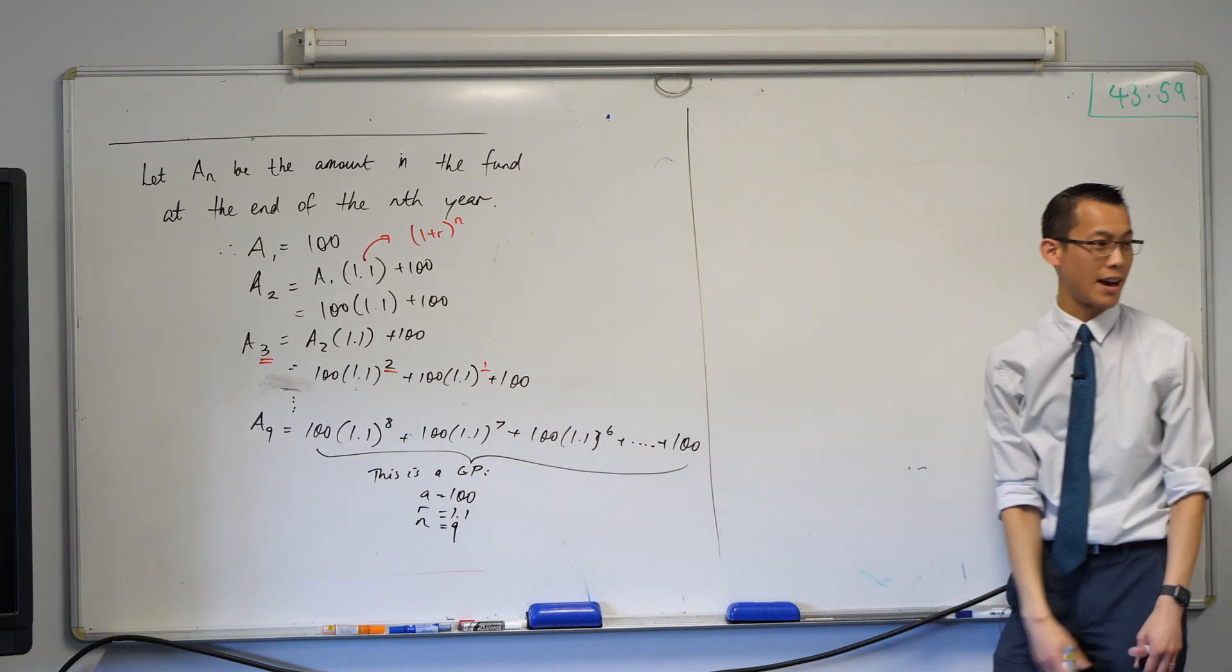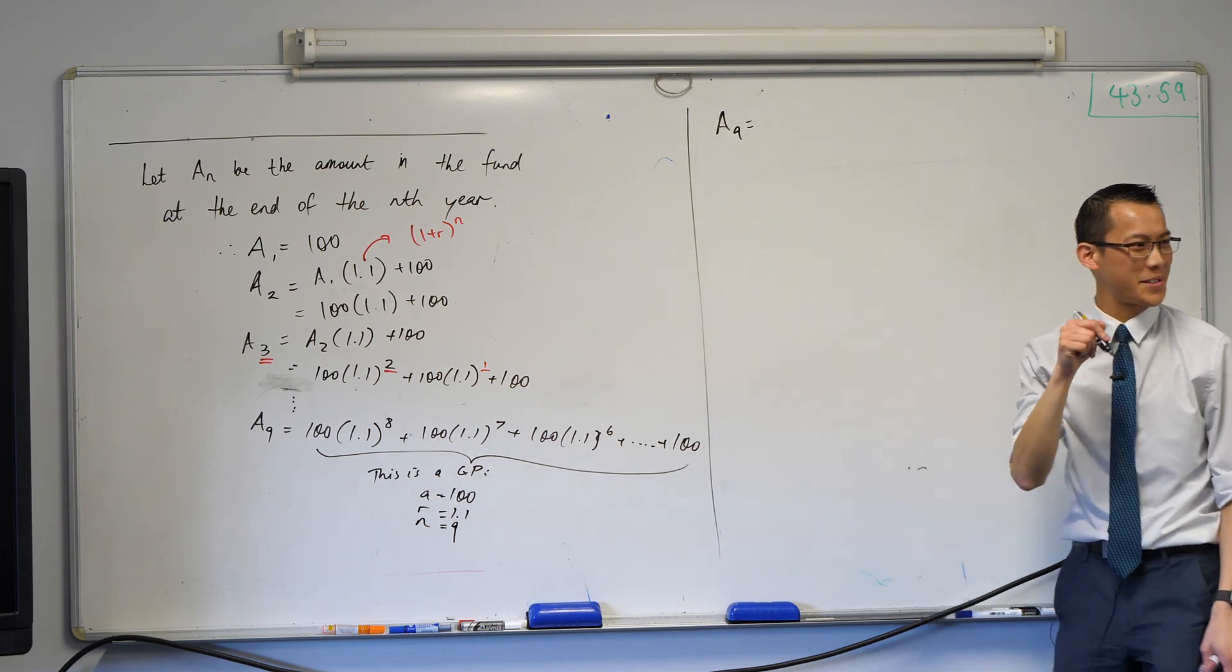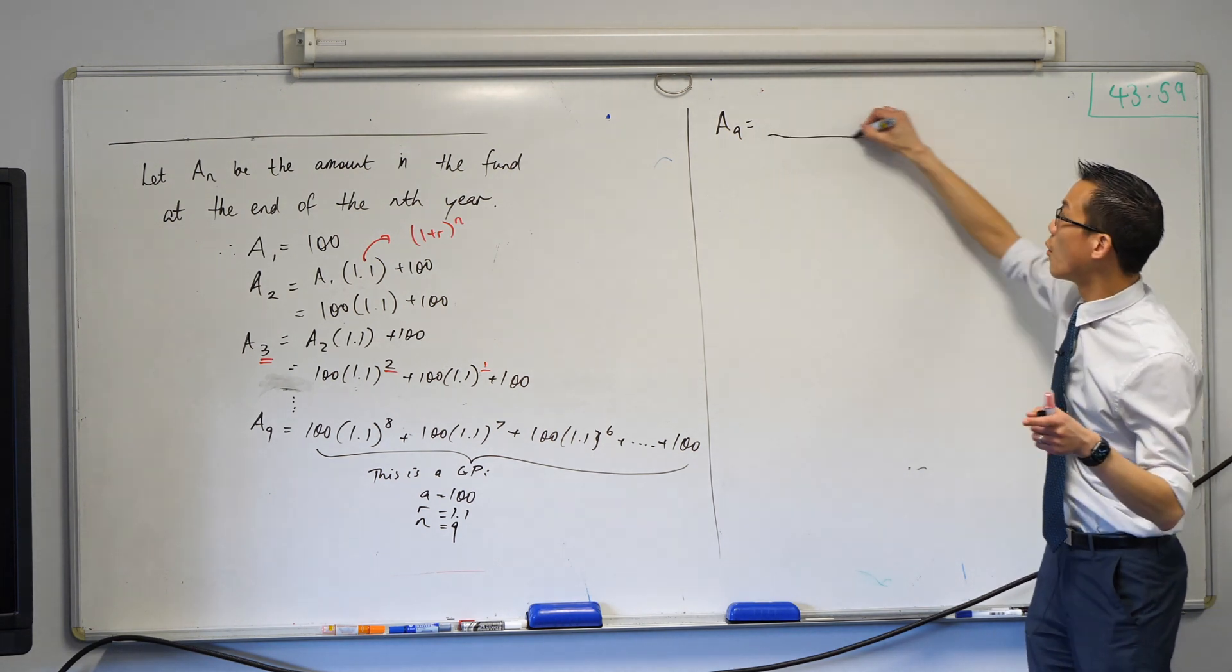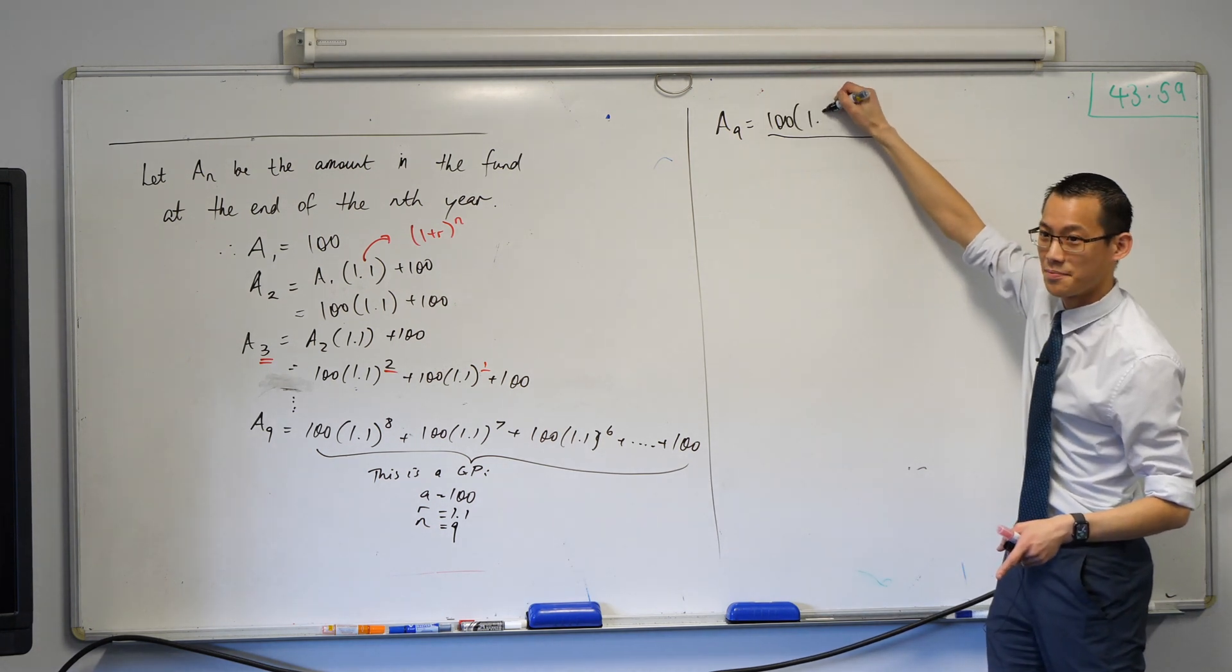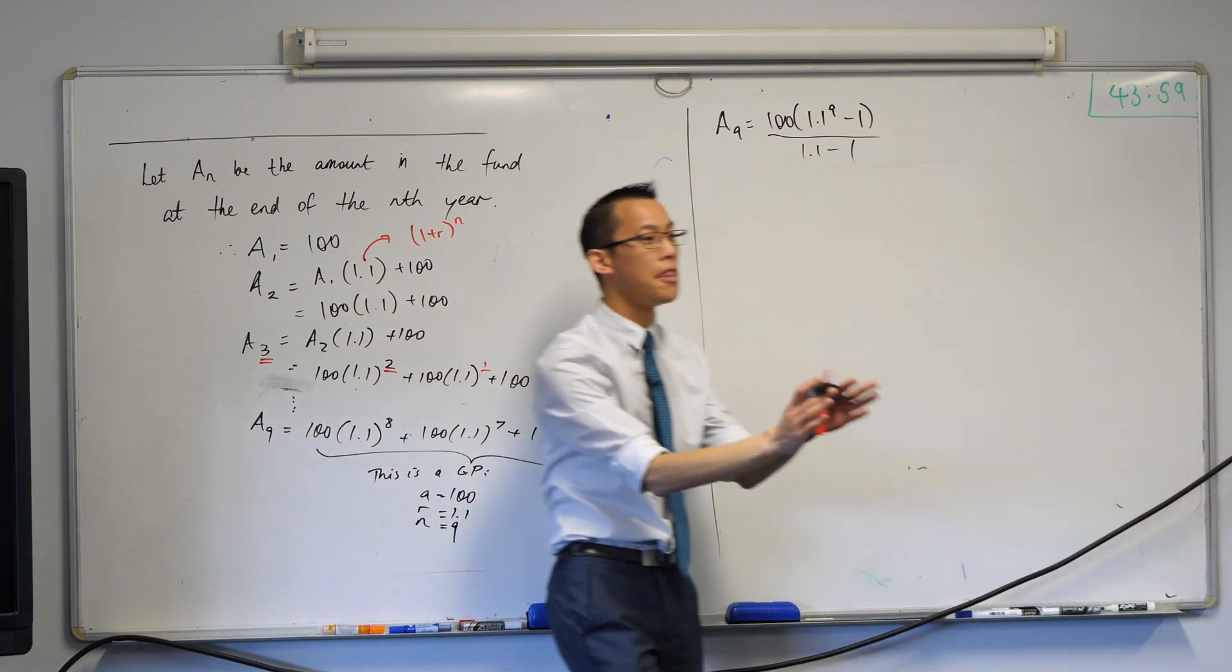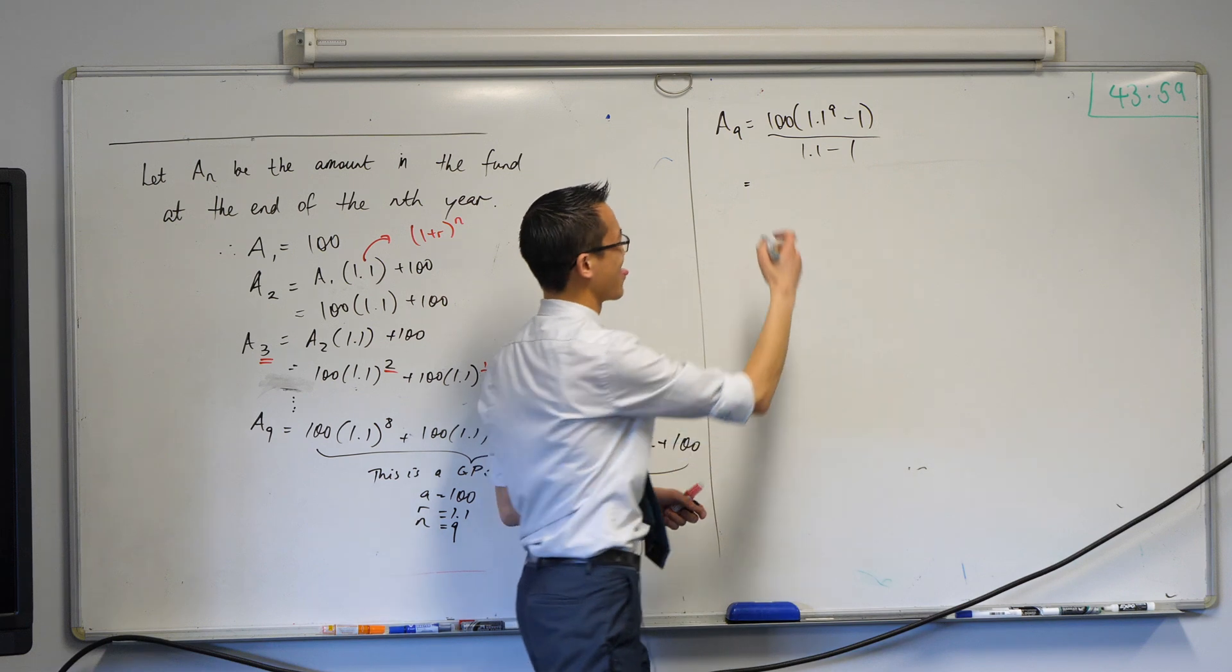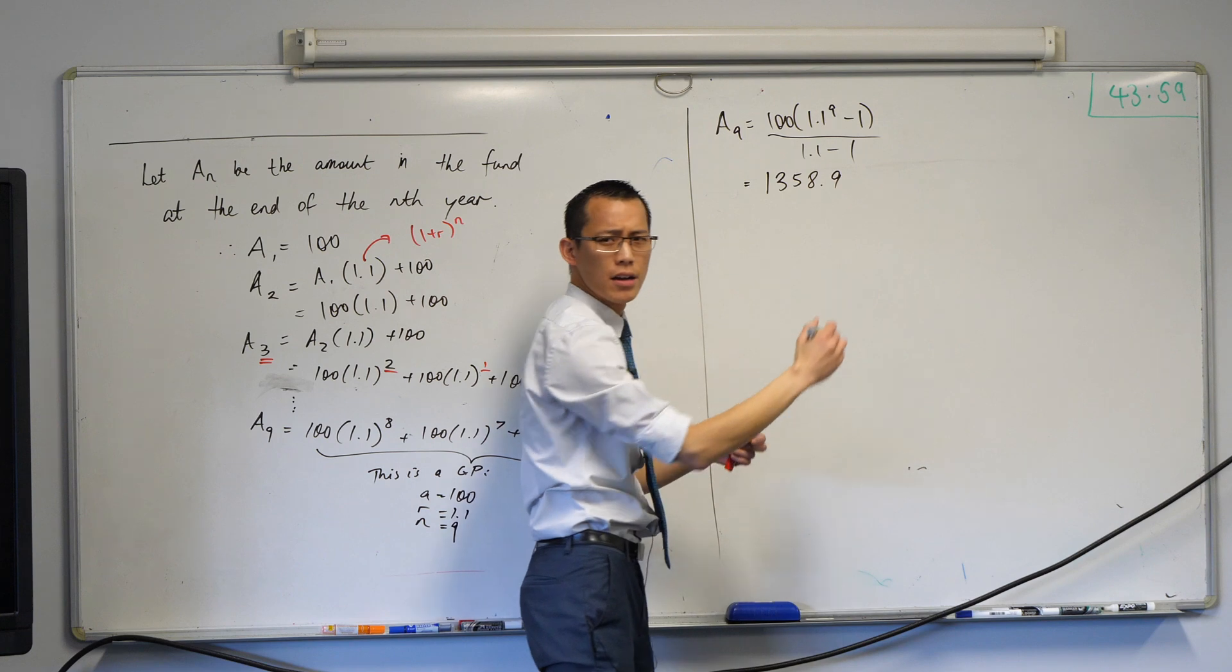So, now I'm ready to pop this guy into the formula. Can you tell me what the formula is and substitute in the appropriate stuff? What am I going to begin by writing? I want the formula. A hundred, bracket 1.1 to the power of nine minus one, bracket on top of 1.1 minus one. Nailed it. Okay, fantastic. This guy. Let me think of the answer. You're just doing some mental calculations for me. Serene, what do you got? 1,357.95. Nine five? Okay.